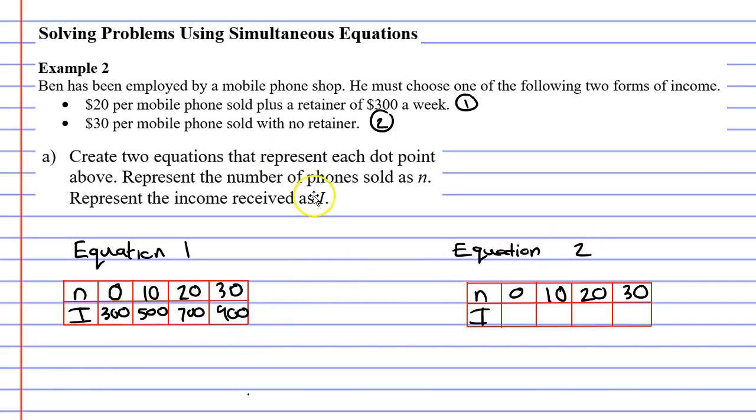Let's now look at equation 2. If he doesn't sell any mobile phones, he's actually going to get $0. Because there is no retainer. If Ben sells 10 mobile phones at $30, 10 times 30 is $300. If he sells 20 phones at $30, that's going to be $600. And we can see that we're going up by $300 each time. The next one's going to be $900.